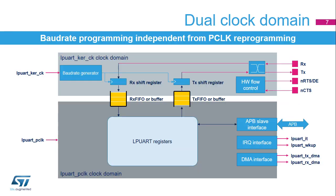The LPUART has a flexible clocking scheme. The registers are accessed through the APB bus, and the kernel is clocked with the LPUART kernel clock, pre-scaled or not, which is independent from the APB clock. In order to pass data from one clock domain to the other, either eight-data FIFOs are used or single data buffers. The LPUART block is an APB slave that can rely on DMA requests to transfer data to or from memory buffers.